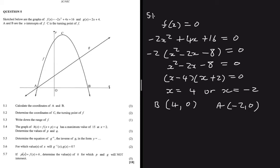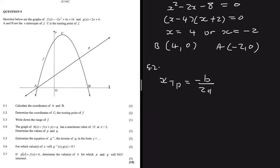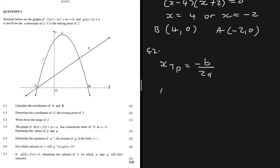Question 5.2: determine the coordinates of C, the turning point. The x-value of the turning point is given by x_tp = -b / (2a). After finding the x-value, substitute it into f(x) to get the y-value and hence the coordinate of the turning point. Our equation is f(x) = -2x² + 4x + 16.